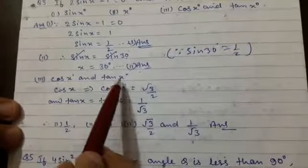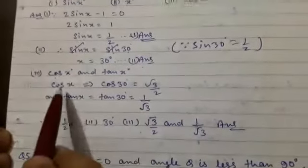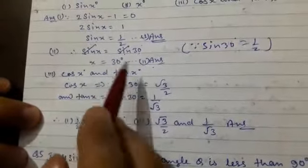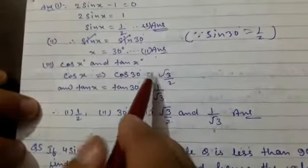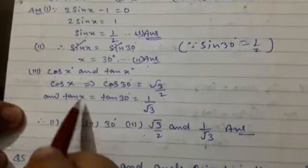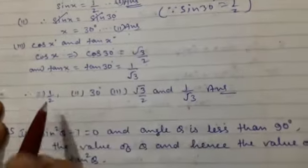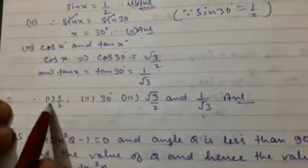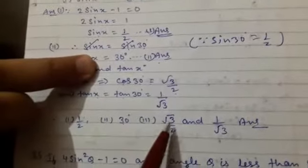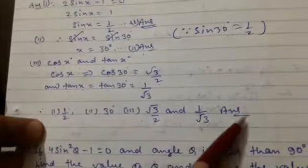Third part — cos x° and tan x°. Since x = 30°, cos x means cos 30° = √3/2. And tan x means tan 30° = 1/√3. Therefore, the answer of the first part is 1/2, second part is 30°, and third part is √3/2 and 1/√3. This is our answer.